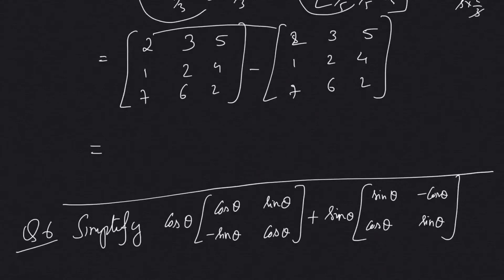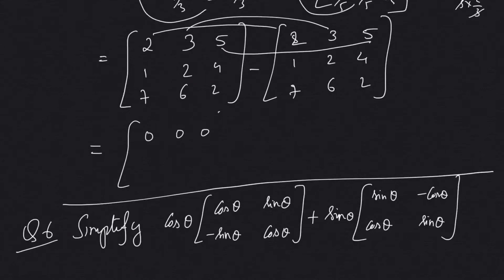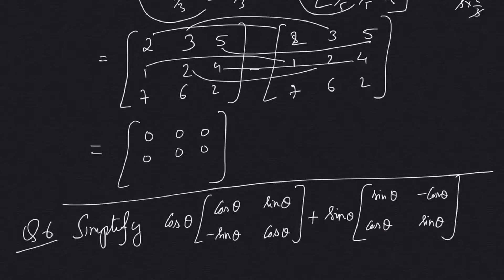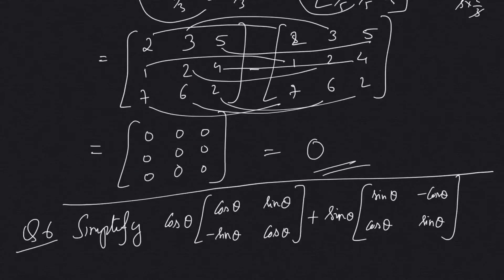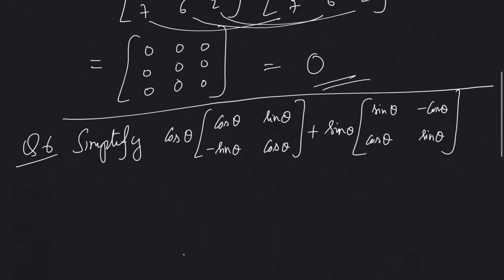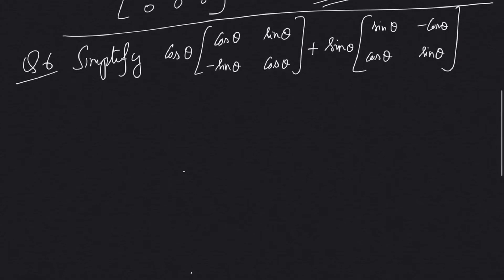When we subtract the corresponding elements: 2−2=0, 3−3=0, 5−5=0, 1−1=0, 2−2=0, 4−4=0, 7−7=0, 6−6=0, 2−2=0. So ultimately we have a zero matrix.